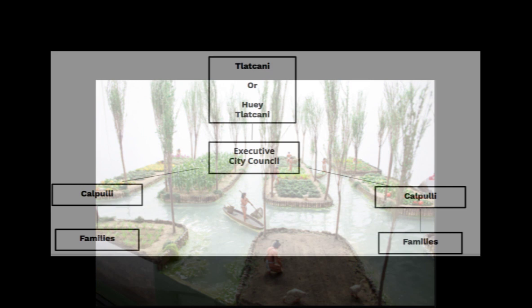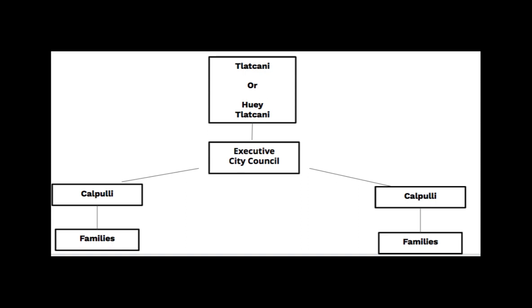The Aztecs had an elaborate political system, and their government resembles ours to some extent. At the most local level, the family unit provided the closest area for organization and stability. Above the family were a group called the calpoli — landowners who would look over and provide for the families. Next up the hierarchy was an executive council for each of the three major cities in the Aztec Empire: Tenochtitlan, Texcoco, and Tlacopan. Each of these executive councils would elect one central leader called the Tlacani. And above the Tlacani was the Huey Tlacani, or emperor.